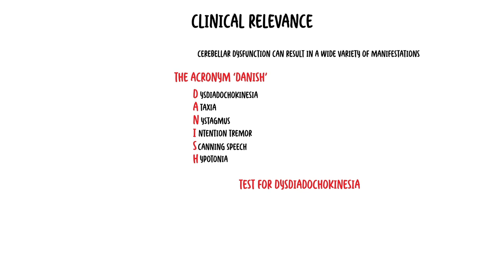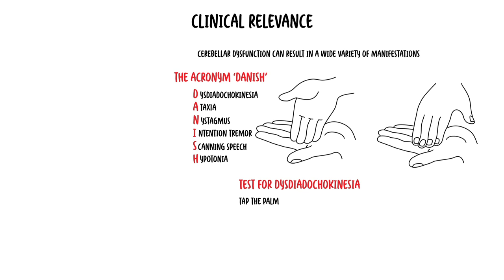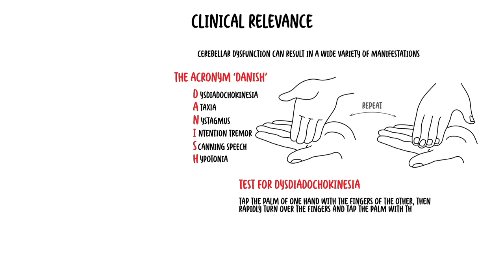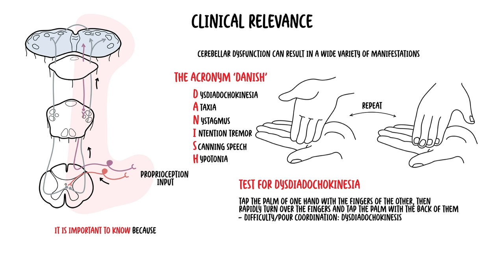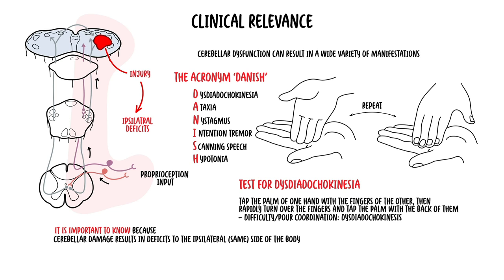Testing for dysdiadochokinesia involves asking the patient to tap the palm of one hand with the fingers of the other, then rapidly turning over the fingers and tapping the palm with the back of them, repeating the process. If there is difficulty performing this with reduced coordination, the person has dysdiadochokinesia. It is important to know that because the cerebellum receives input from and controls output to the ipsilateral side of the body, cerebellar damage results in deficits to the ipsilateral — same — side of the body.